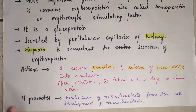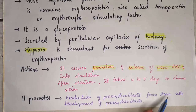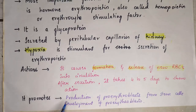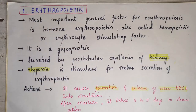Erythropoietin also promotes the production of pro-erythroblasts from the stem cells. Pro-erythroblasts are the immature erythrocytes. It aids not only in the production of pro-erythroblasts but also in their further development.